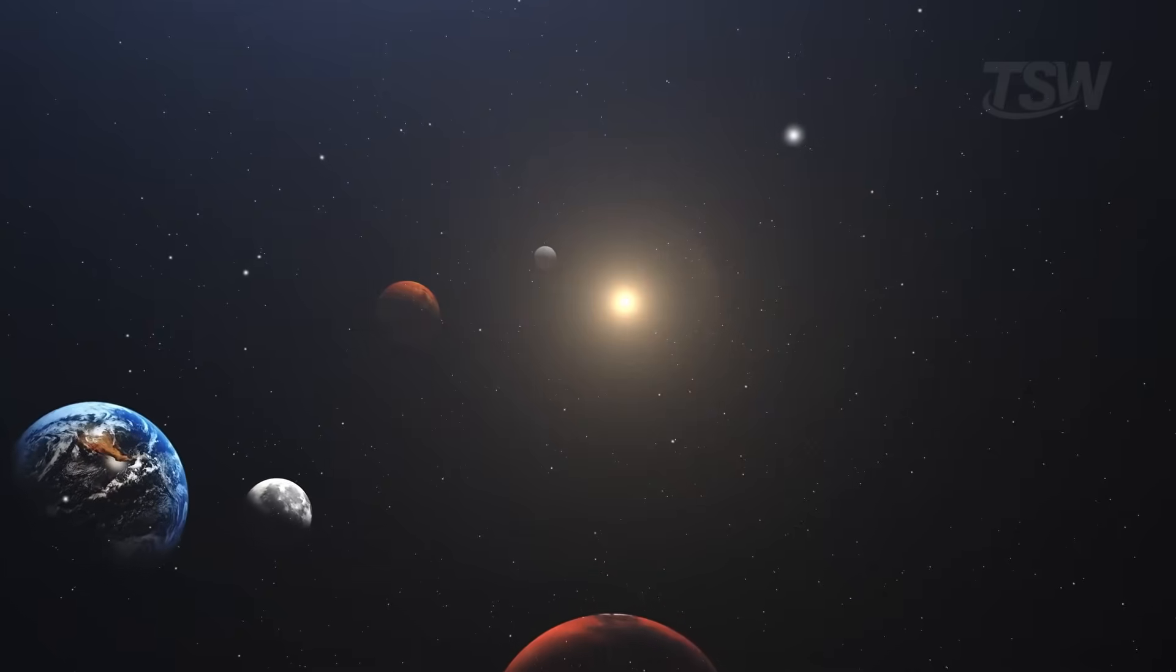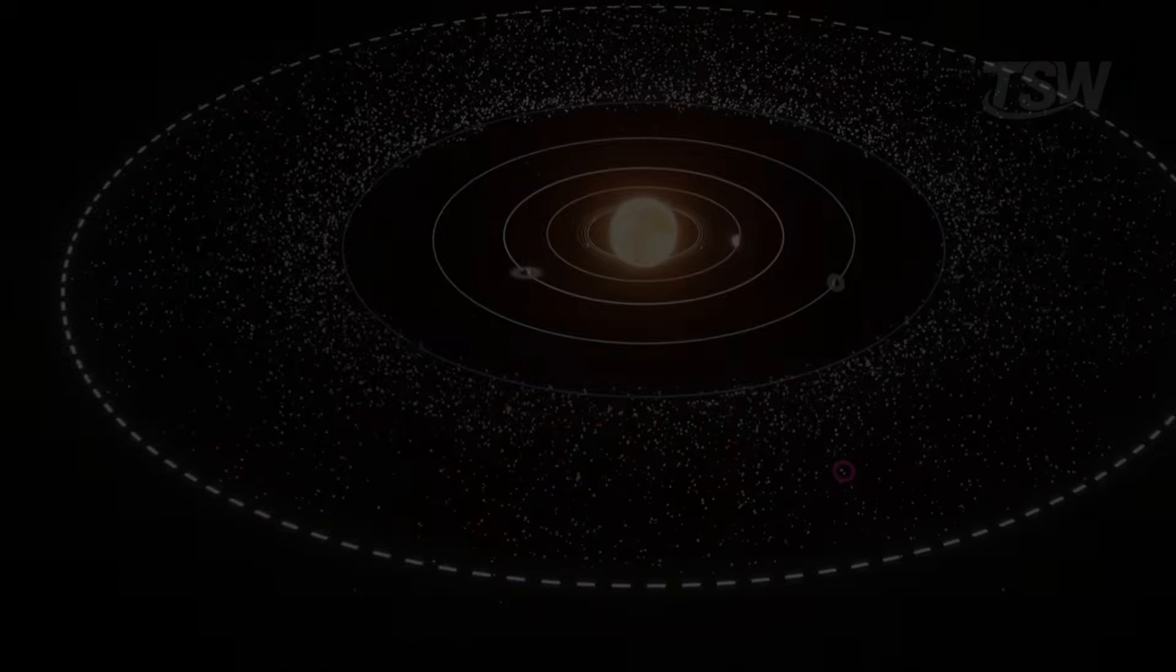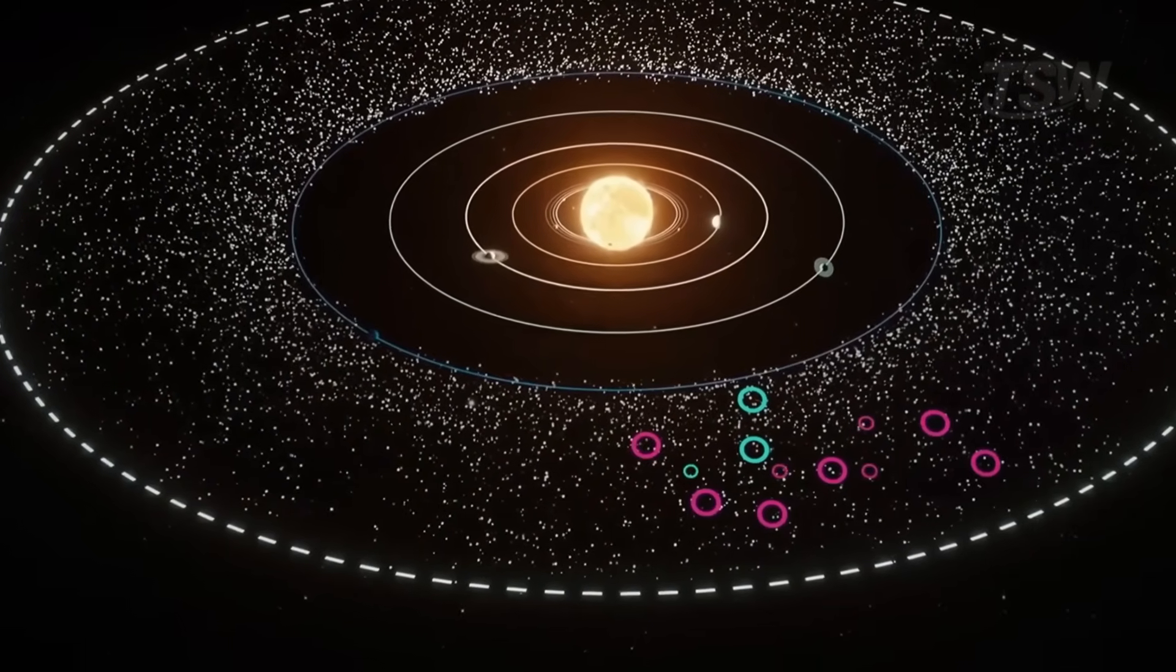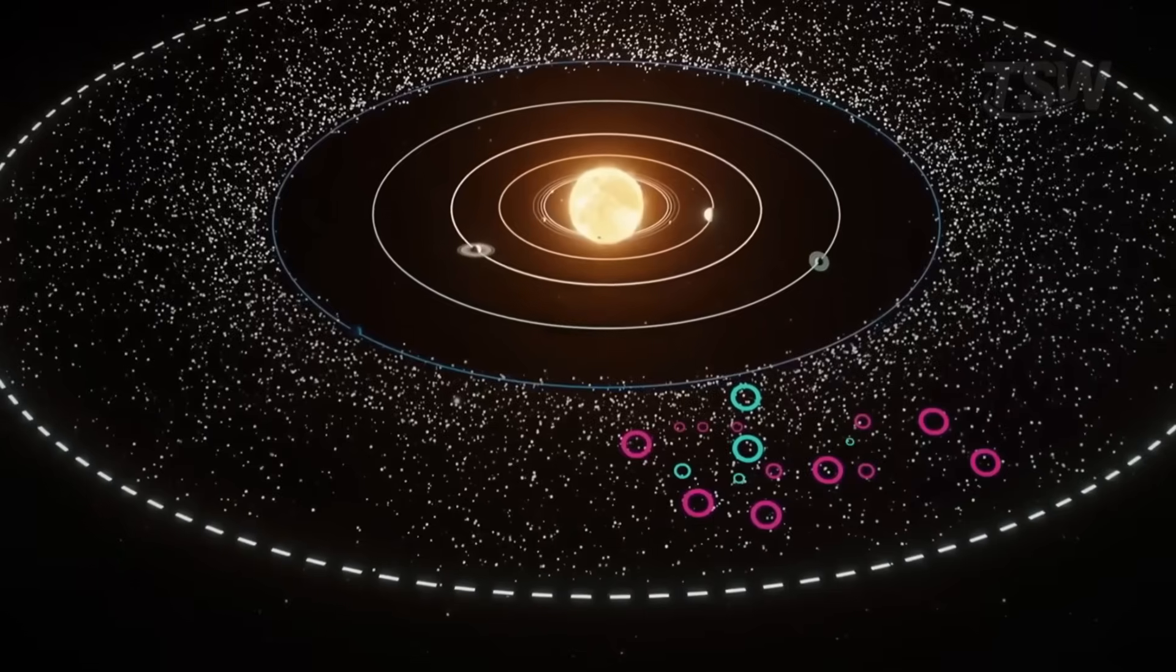So, the next time someone tells you the solar system ends at Neptune, remember, that's only the beginning. In the outskirts of Pluto, along twisted and distant orbits, there's a true legion of worlds waiting to be discovered.